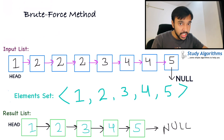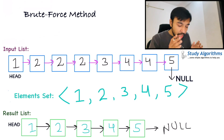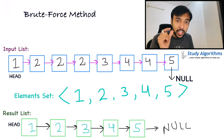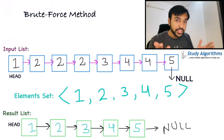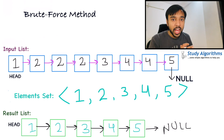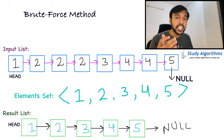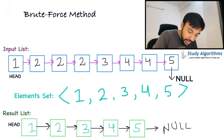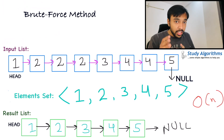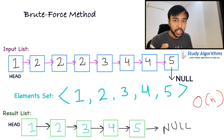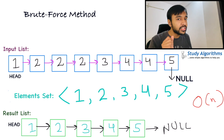Now this method works perfectly and it will give you the correct solution. But do you see the problem with this method? If your linked list is very large, then it could be a case that you are creating an extra set of the same space. So let us say you have a linked list of 1000 elements — there could be a case that you are creating a set of 800 elements, so in a way you are wasting a lot of space. The space complexity of this solution turns out to be O(m). And if you notice, we never take any advantage of the fact that this is a linked list and it is also sorted.